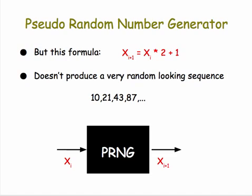For example, the numbers keep getting larger. As you can tell from this formula, they're going to just keep getting larger. So that's not a very random looking sequence. But just to make sure you understand this formula and how it works, I'm going to pause here and give you a couple of simple problems to do.